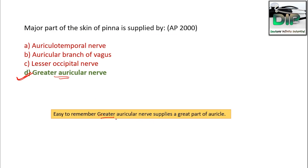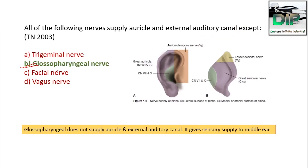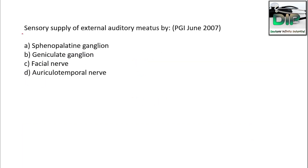All of the following nerves supply the auricle and external auditory canal except: A) Trigeminal, B) Glossopharyngeal, C) Facial, D) Vagus. The correct answer is glossopharyngeal, because it supplies the middle ear. The trigeminal (V), facial (VII), and vagus (X) — cranial nerves 5, 7, and 10 — supply the external auditory canal and auricle.